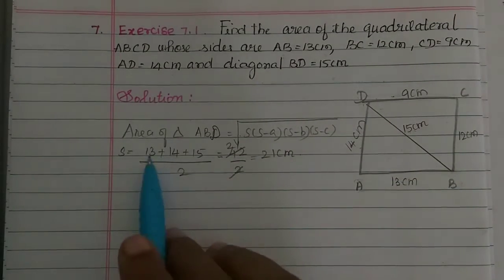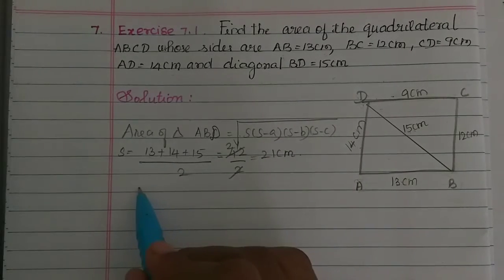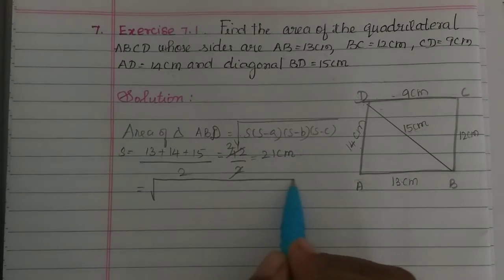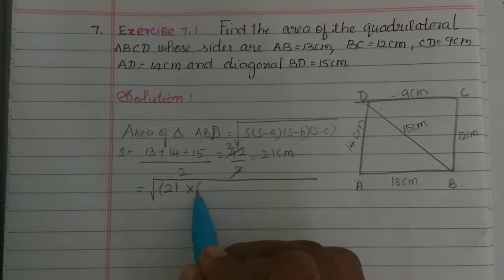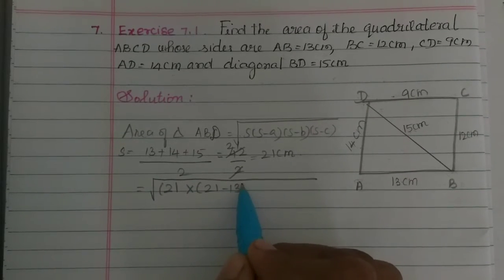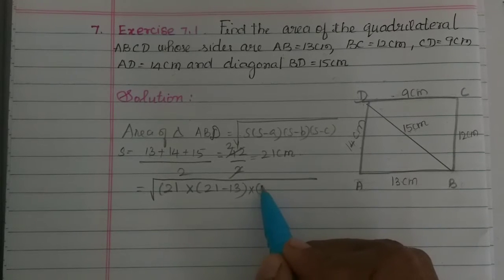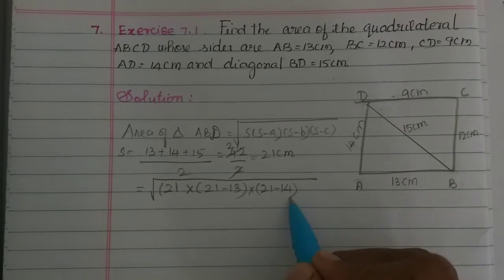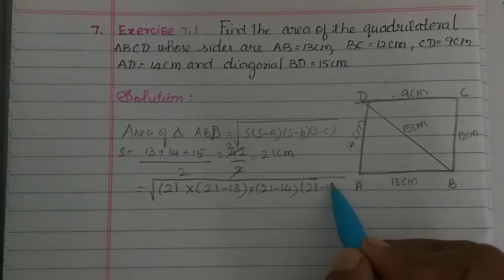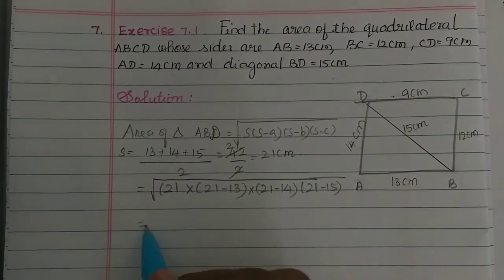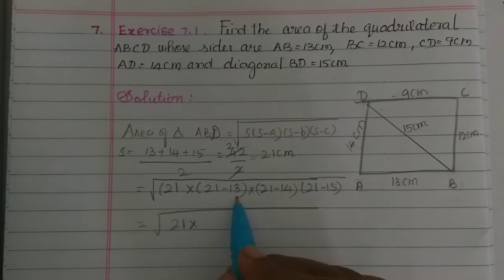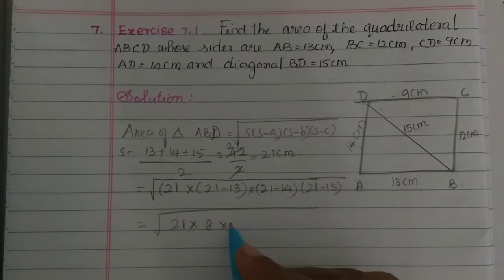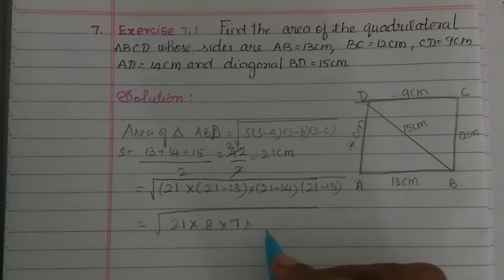So S is equal to 21 centimeters. Now, area of triangle ABD equals the square root of S into S minus 13 into S minus 14 into S minus 15, which is equal to the square root of 21 into 8 into 7 into 6, since 21 minus 13 is 8, 21 minus 14 is 7, and 21 minus 15 is 6.